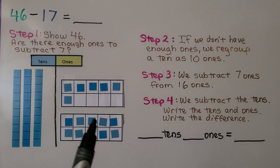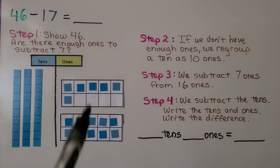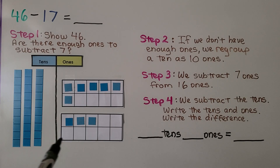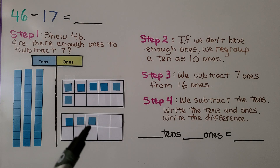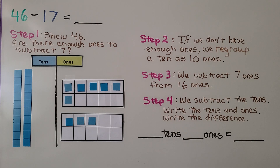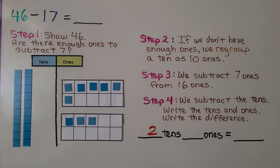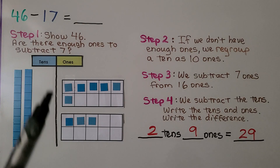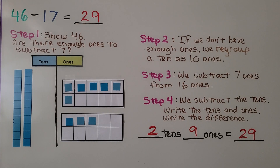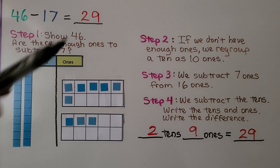For step 3, we subtract 7 1s from these 16 1s. We took away 5, 6, 7. Now we subtract the 10s. We need to take away 1 10. We write the 10s and the 1s. We have 2 10s and 9 1s. 2 10s and 9 1s is equal to 29. That means 46 minus 17 is equal to 29.